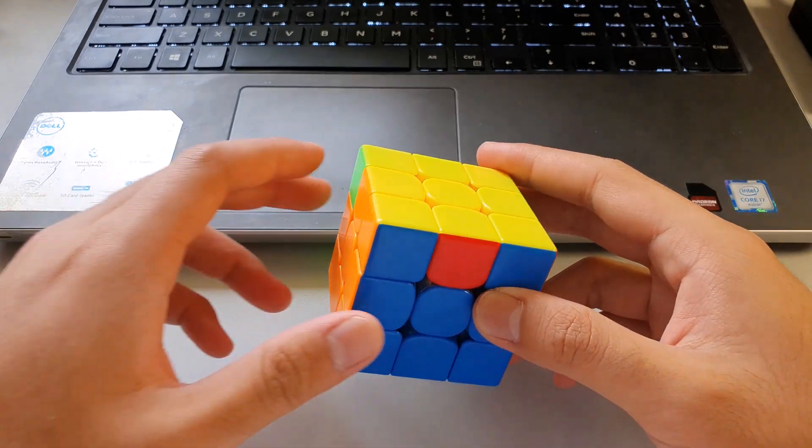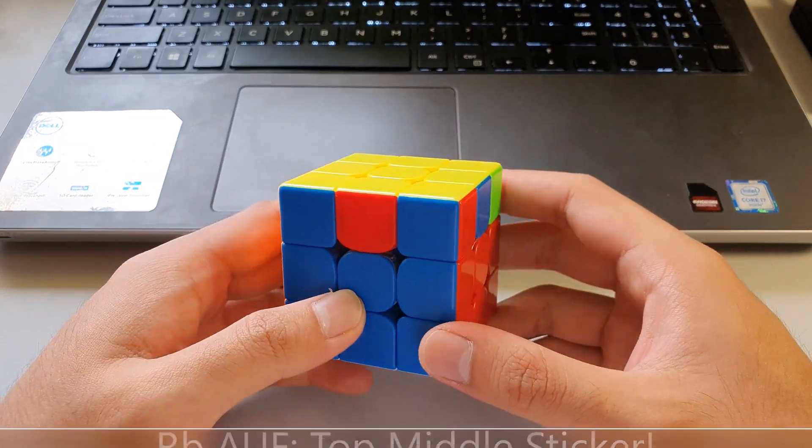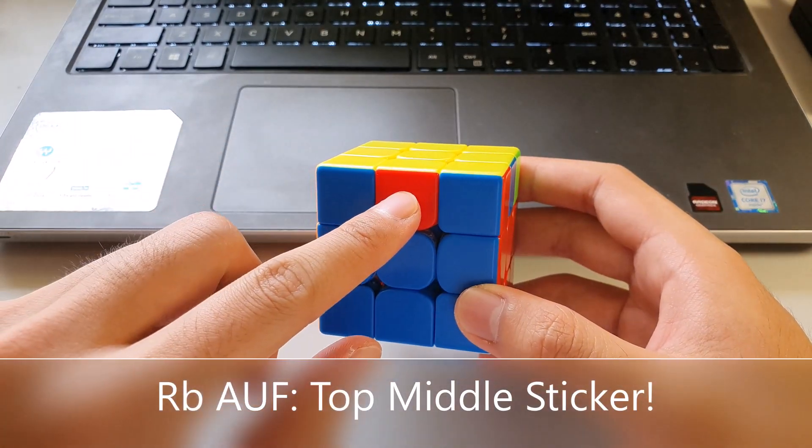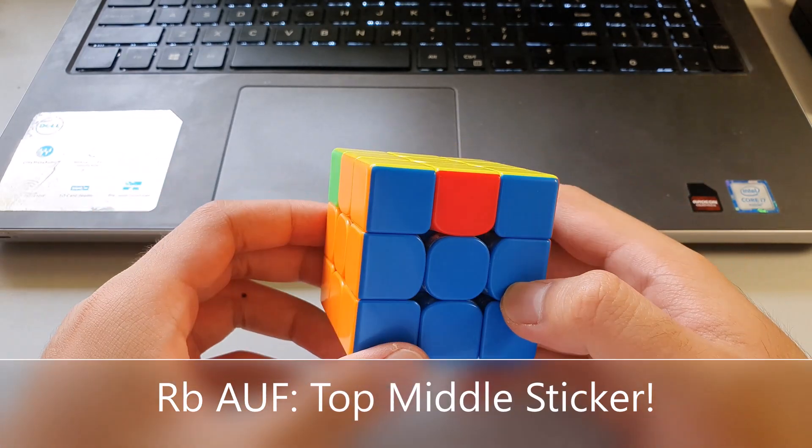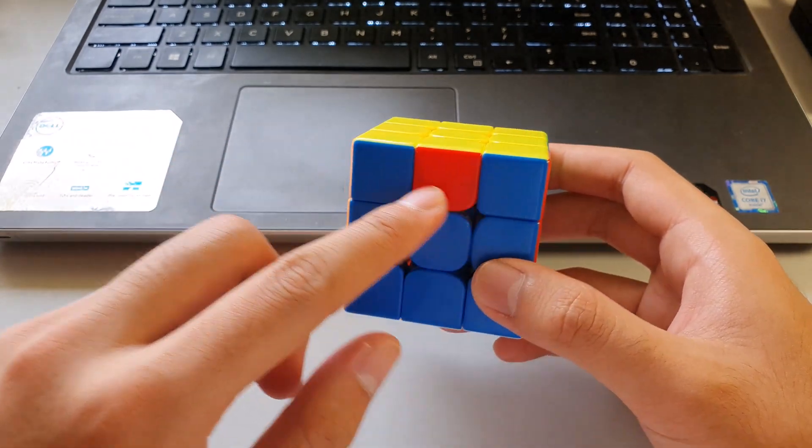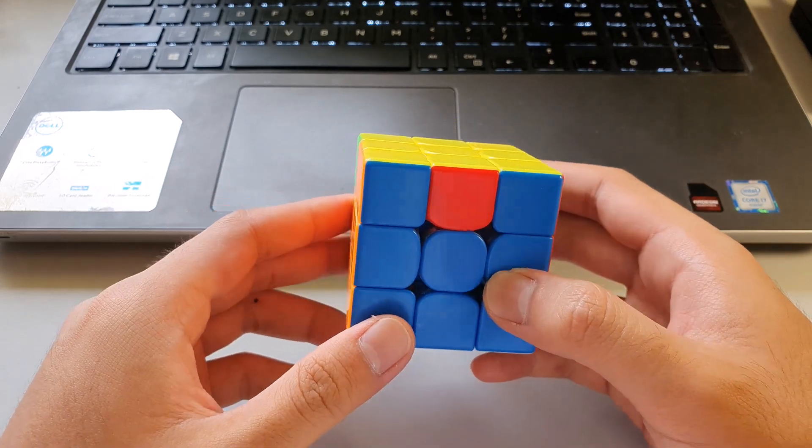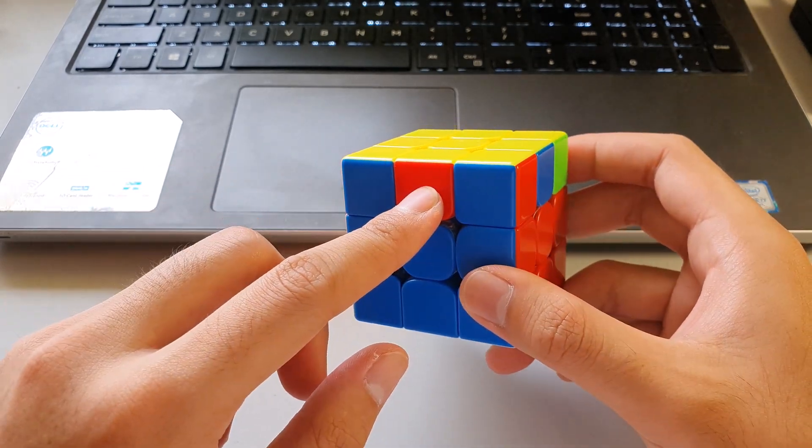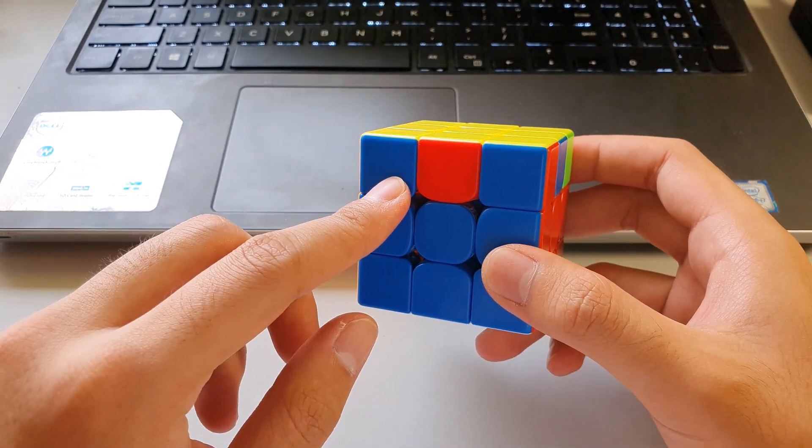For the RB perm, the AUF can be recognized by looking at the middle sticker here in between the headlights. This sticker represents the color that will be at the front after you do the algorithm. Being a red sticker here, which means red is going to be at the front afterwards.